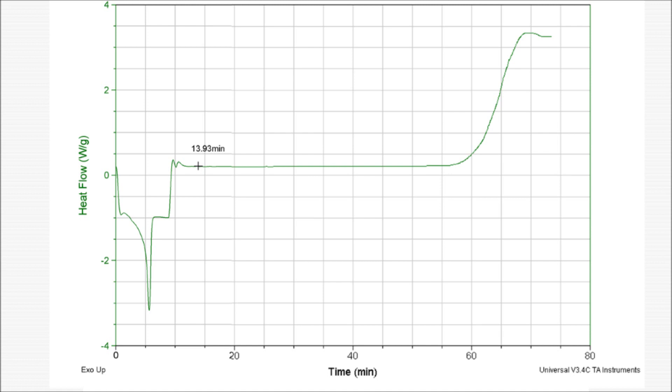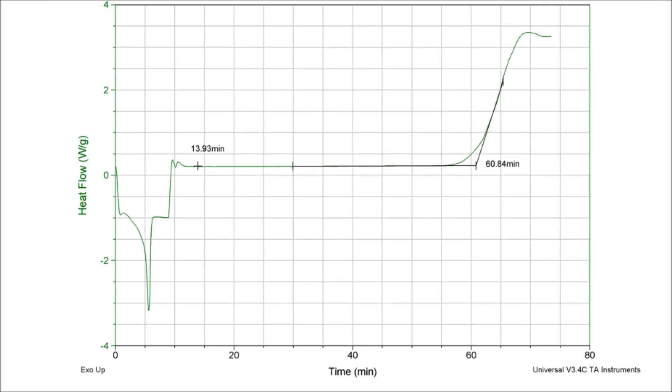To do this, we first extend the line of the isotherm to the right to create our baseline. Next, we draw the line tangent to the exotherm. The intersection of this tangent line and the baseline is known as our onset time, T sub onset. For our curve here, the T sub onset is calculated to be 60.84 minutes.